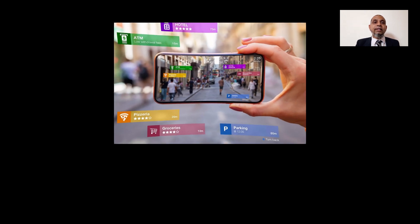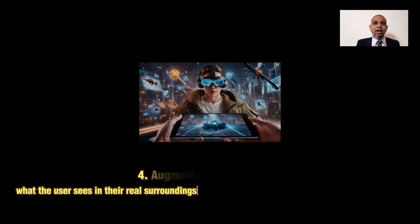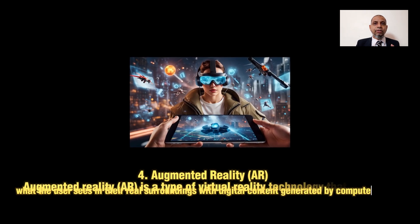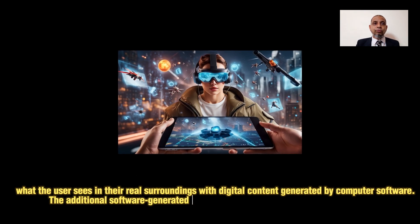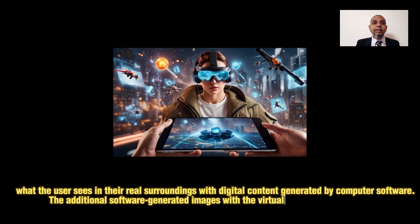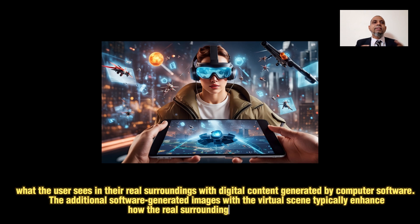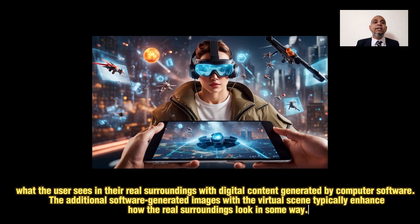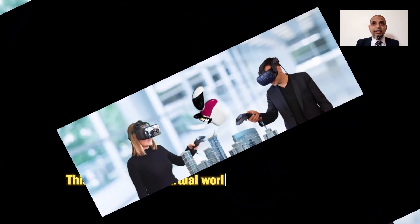Type number four: augmented reality. Augmented reality is a type of virtual reality technology that blends what the user sees in their real surroundings with digital content generated by computer software. The additional software-generated images with virtual scenes typically enhance how the real surroundings appear. There are some differences between augmented and virtual reality which will be discussed later on.